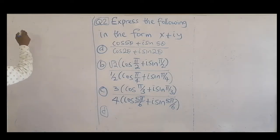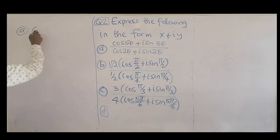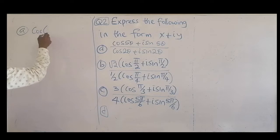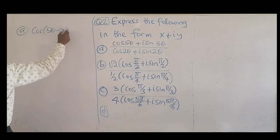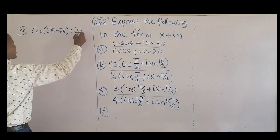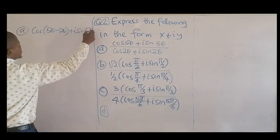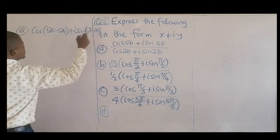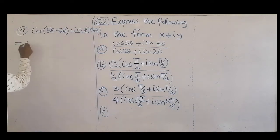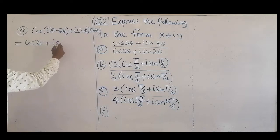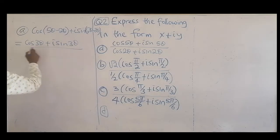And don't forget for division, A is going to be cos 5 theta minus 2 theta plus i sine 5 theta minus 2 theta. And this will be equal to cos 3 theta plus i sine 3 theta. And that's that, and that's our question.